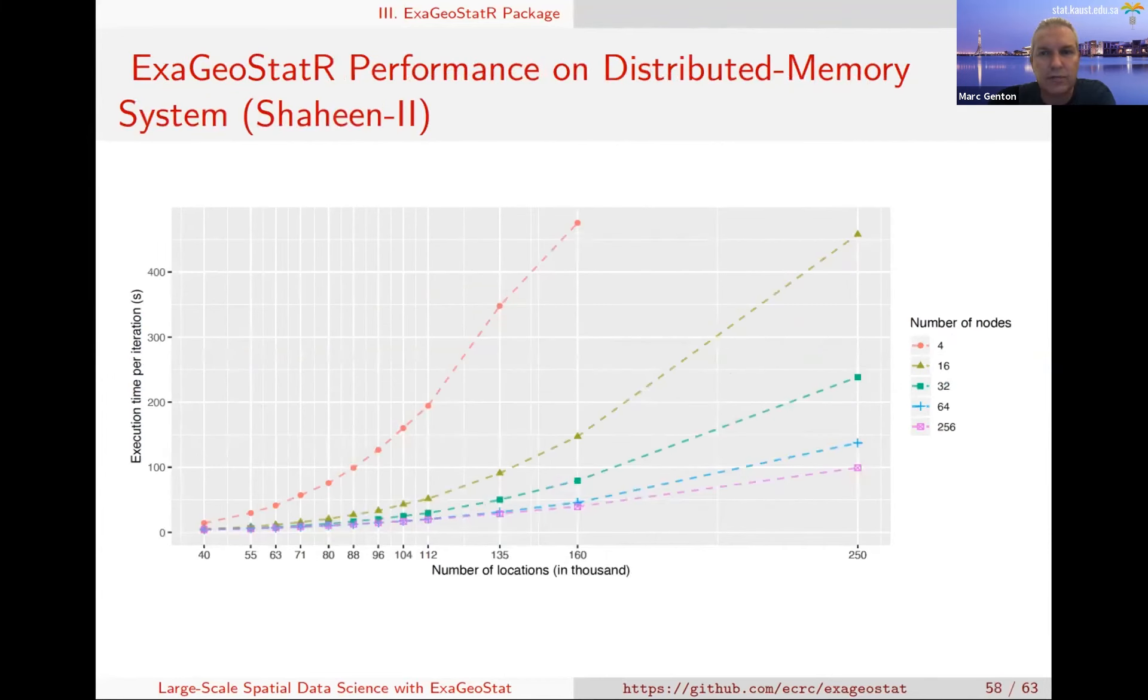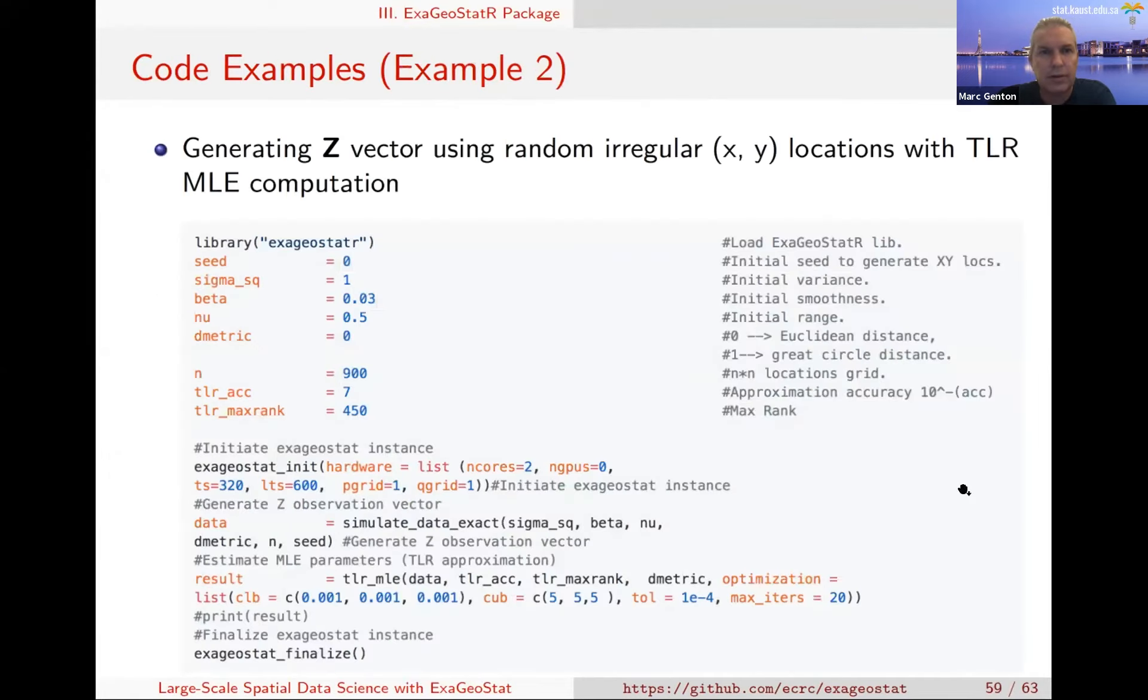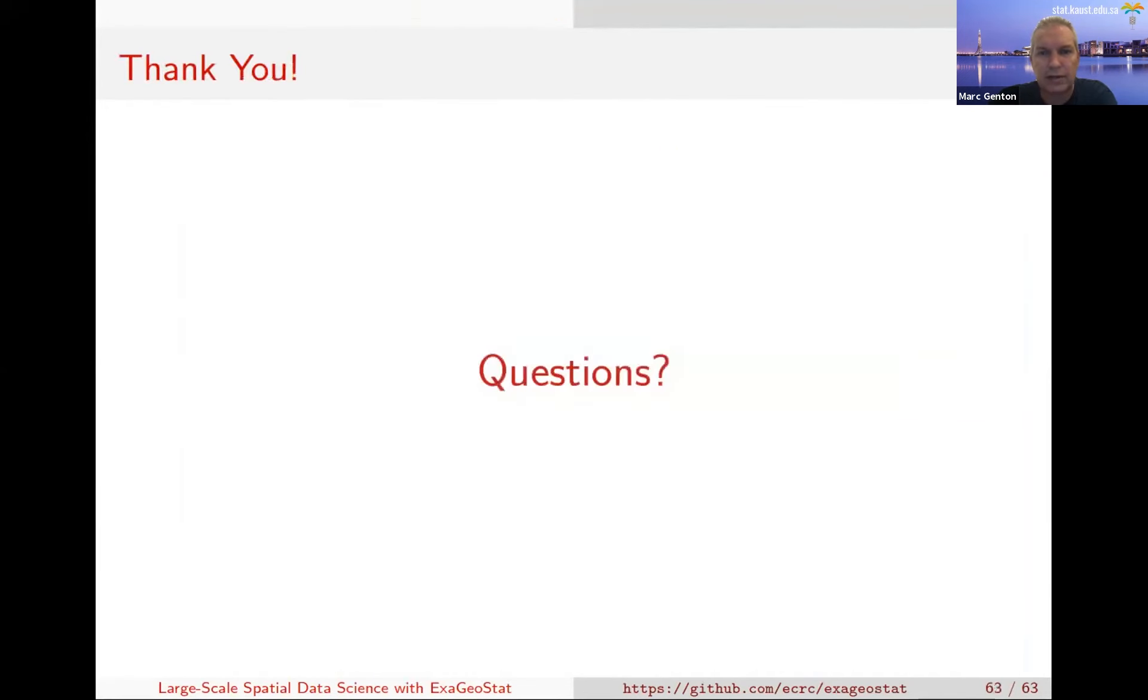There is another one if you run on a supercomputer. That was run on Shaheen 2 here at Kaust. Again, the plot is execution time per iteration per evaluation of the likelihood as a function of number of locations in thousands. Depending on the number of nodes used, the red is for four nodes and goes up to 256 nodes in purple. You can see the type of improvement - this goes up to 250,000 dimensions.